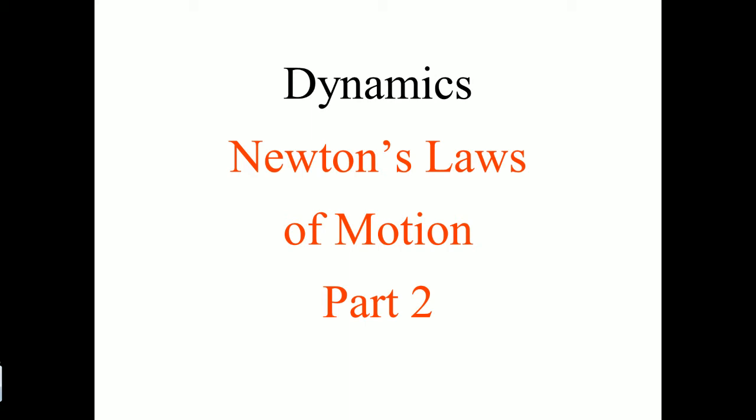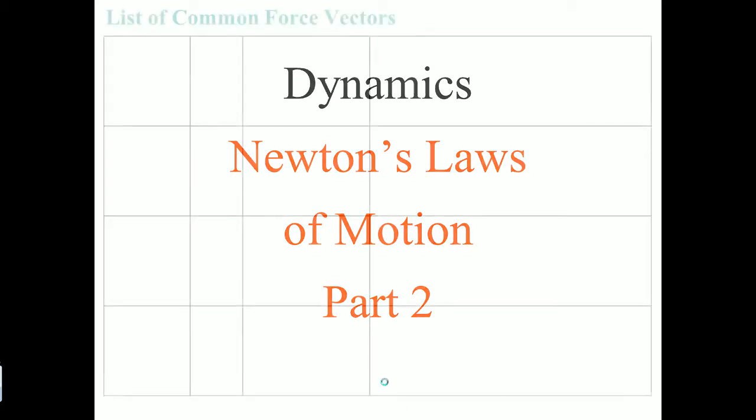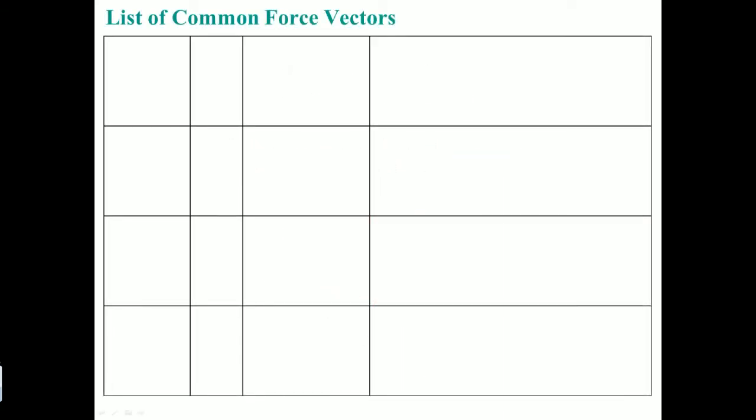This is the second part of Newton's law of motion, covering common forces you're going to see in AP Physics 1. The first one is the weight force. You can use the letter W or FG because it is considered the force of gravity. This always points downward to the ground, toward the core of the earth, because that's how the gravitational field exists.